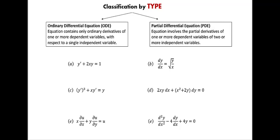Partial differential equations are even easier to spot — partial derivatives have special notation, that curly D. I can see one equation with that curly D, and it's equation E. On top is always the dependent variable, which is u, and on the bottom is always the independent variable. Notice how there are two independent variables here, x and y, so equation E is definitely a partial differential equation.